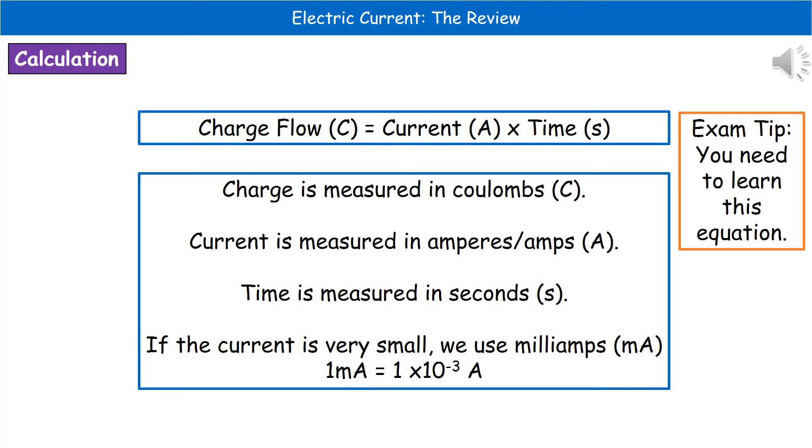The next bit we come on to is the first of our P3 calculations that we need to remember. So the first calculation we've got to actually remember and to use on our actual exam is charge flow, which is measured in coulombs, is the current in amps times by the time in seconds.